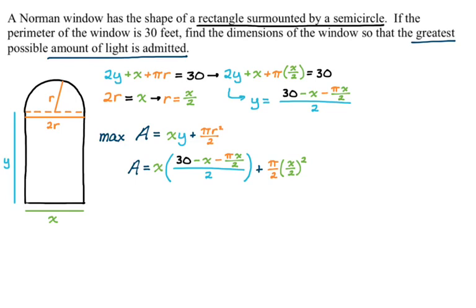What I'm going to do is simplify a little bit before I take a derivative. So I'm going to take out 1/2 and then distribute x. So I get (1/2)(30x - x² - (π/2)x²). And then this remaining thing here, I have π/2 times x²/4, so that's π/8 x². Now I want to find the derivative.